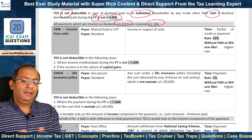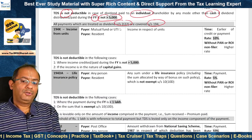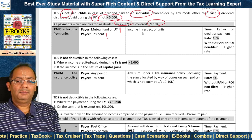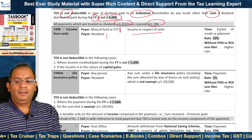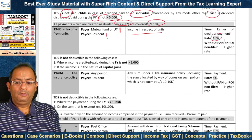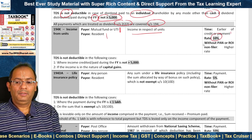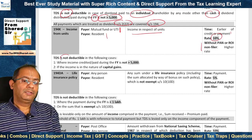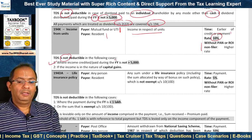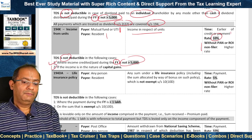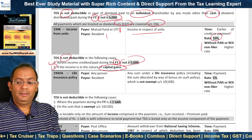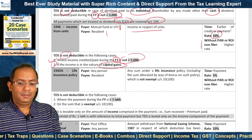Section 194K covers income from units. The payer should be a mutual fund or Unit Trust of India and the payee should be a resident. The specified payment is income in respect of units. TDS is deducted at the time of the earlier of credit or payment at the rate of 10%, and a higher rate applies for without-PAN or ROI non-filer cases. TDS is not deductible where income credited or paid during the financial year is not more than Rs. 5,000, or if the income is in the nature of capital gains, for example on transfer of units.